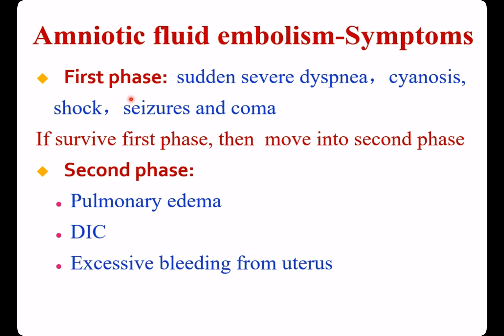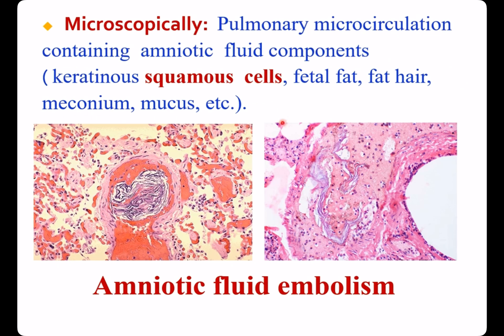Second phase also includes excessive bleeding from the uterus. Pulmonary microcirculation contains amniotic fluid components: keratinous squamous cells, mucus, fetal hair, and others. This is the mother's pulmonary artery branch showing keratinous squamous cells shed from the fetus.